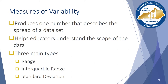Another common way to describe a data set is through measures of variability. Variability provides a single number that describes how spread out the scores in a data set are. This is valuable information for educators who need to ensure that all students are moving. Generally, when variability is low, students are moving as a group, whereas a data set with high variability may suggest that some students are moving faster or slower than others. There are three main measures of variability used in educational research: the range, interquartile range, and standard deviation.